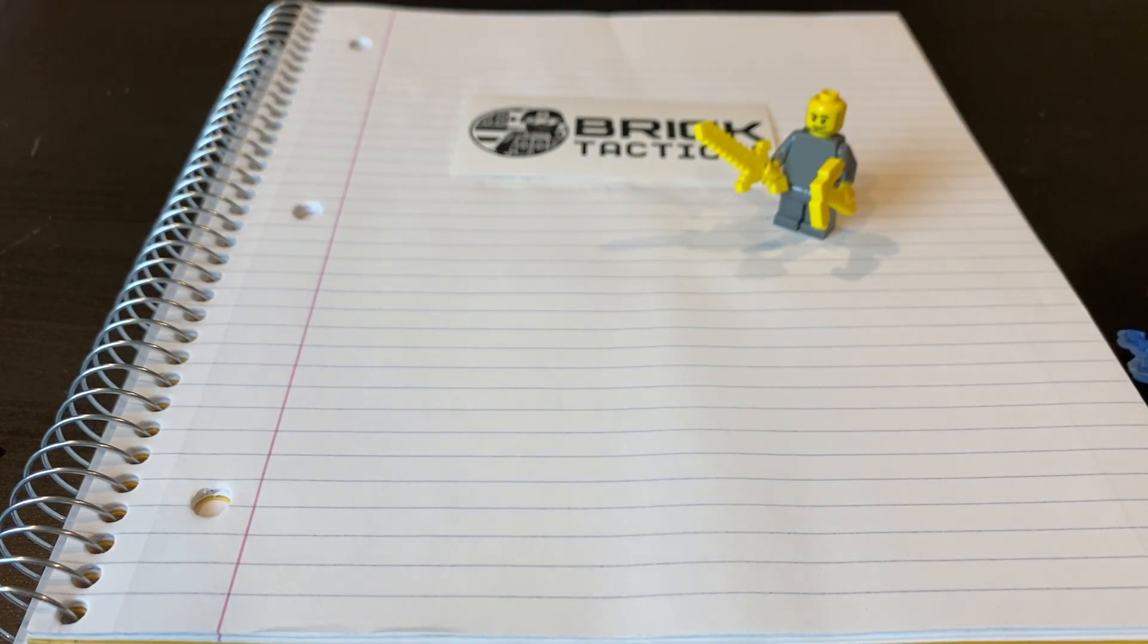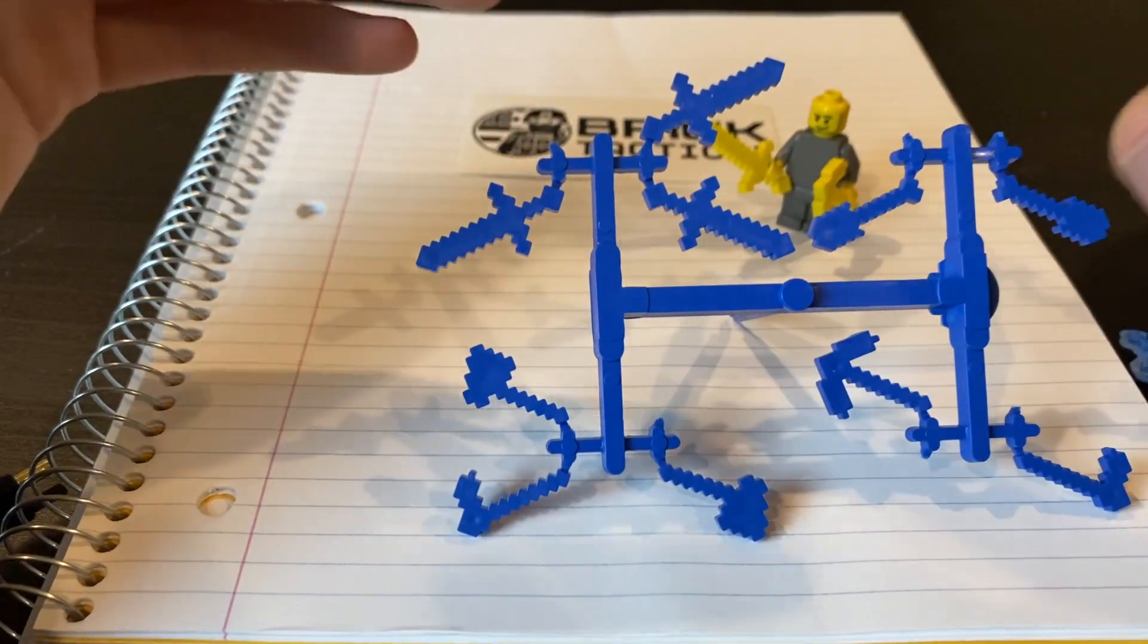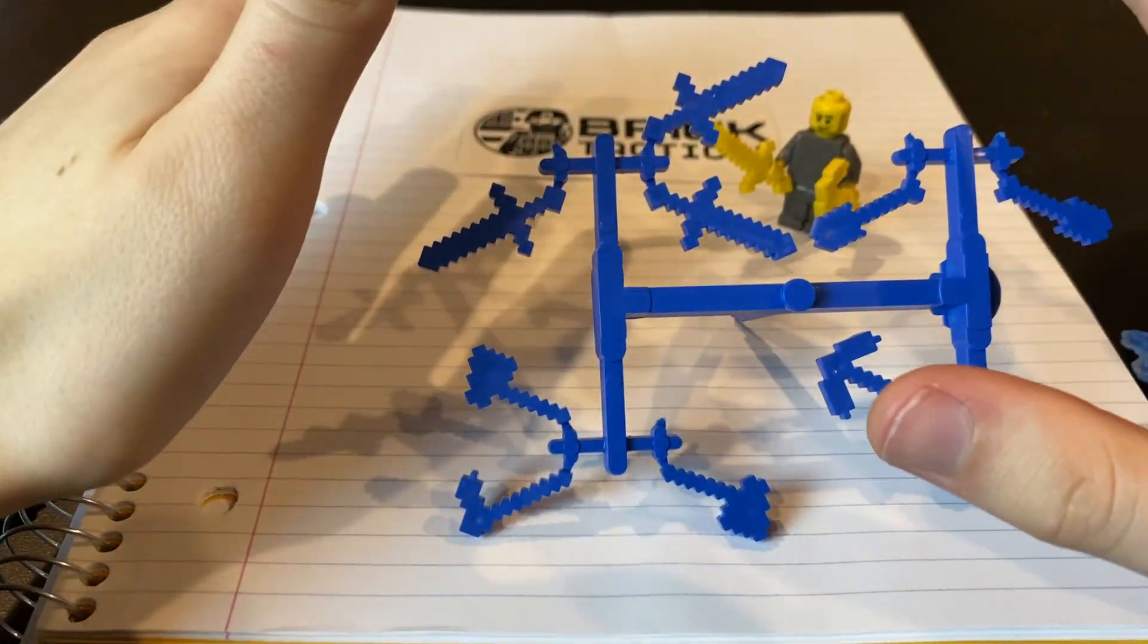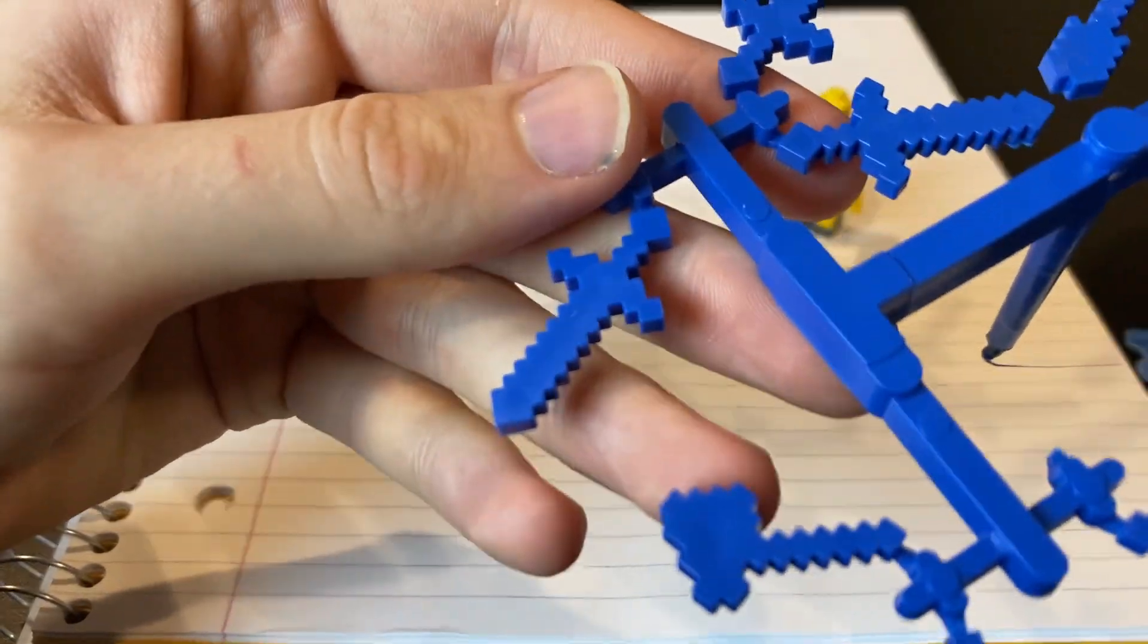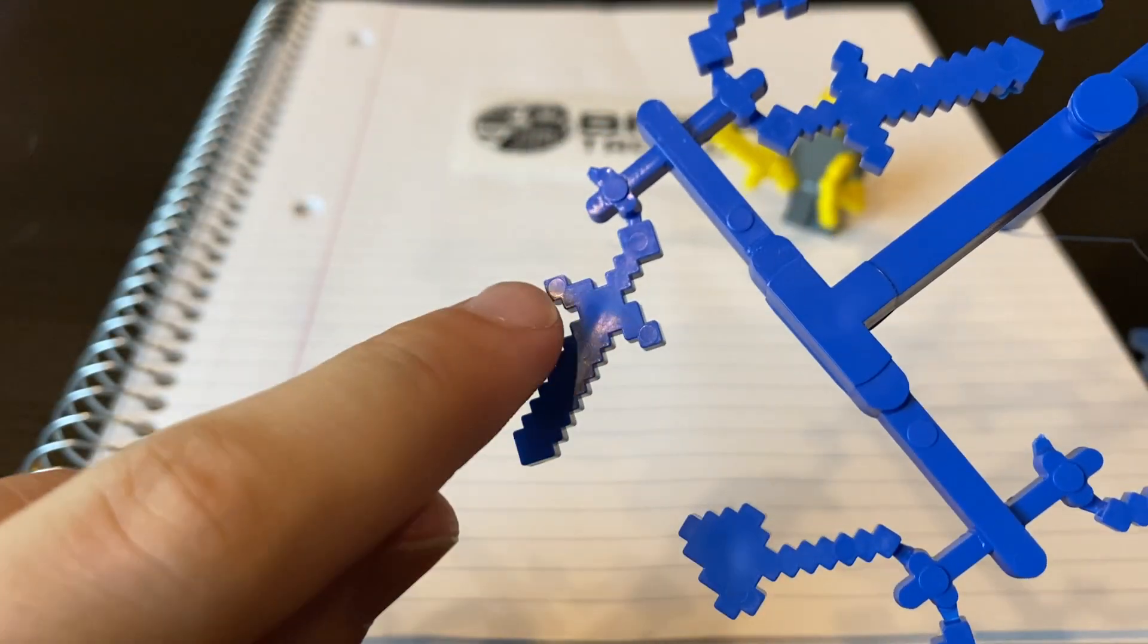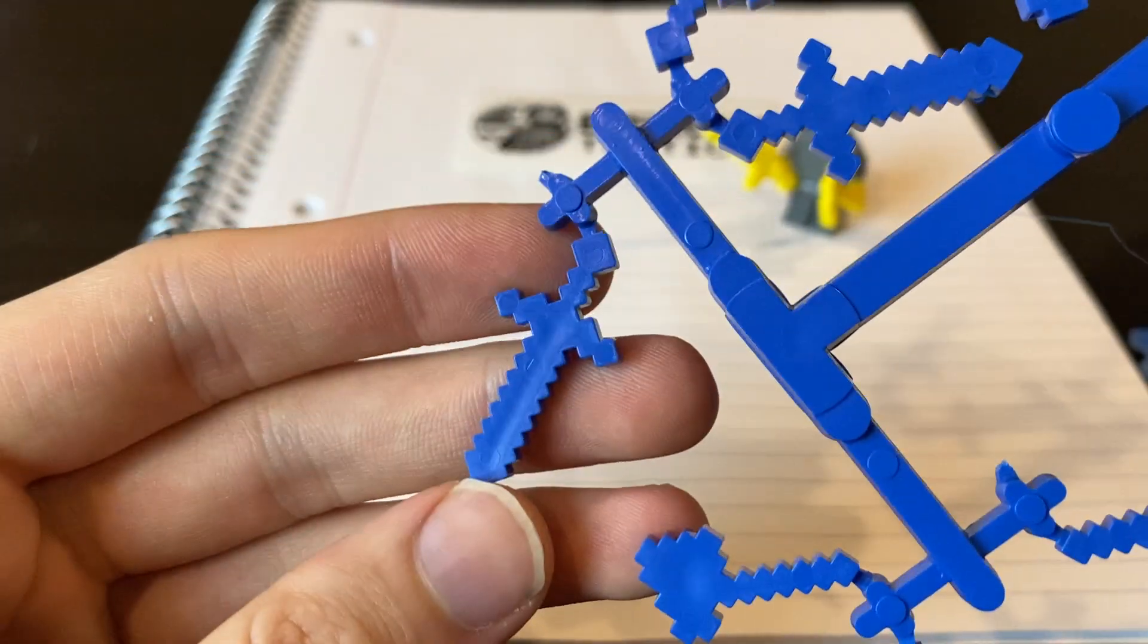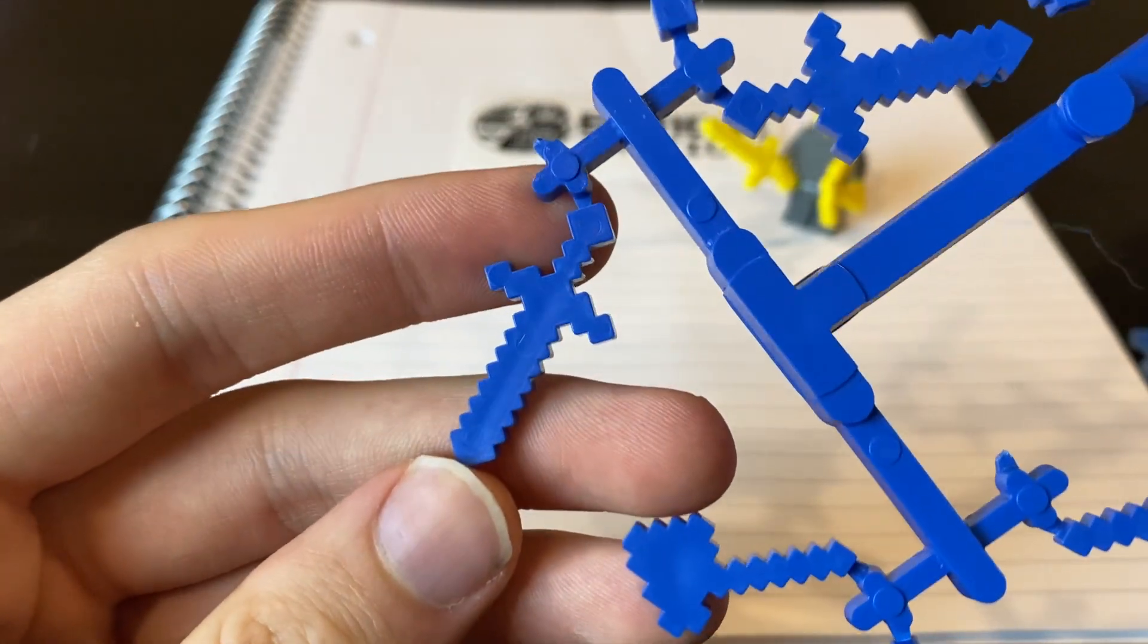So that's very important. Another thing is people call these production circles. That's not what they're called. These circles that you see on the parts, you see how there's one right there, there, there, there, there. There's five of them on this sword. Those are called ejector pin marks.